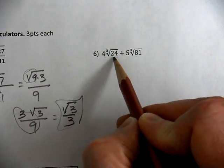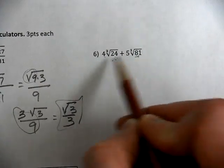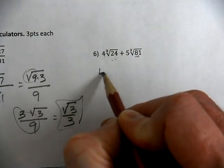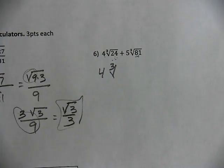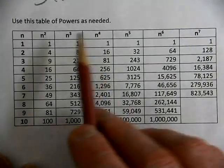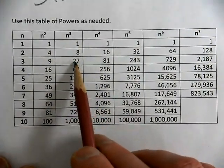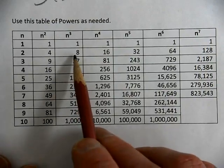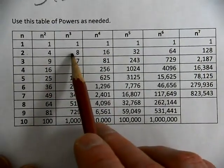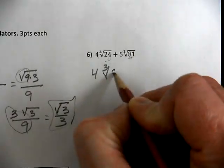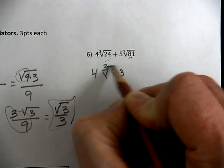Here, my radicands are not the same. They need to be the same. Again, I'm working with the cubed root. When I look at my table, we're working with the cubed root. Which of these numbers goes into 24? 8 goes into 24. 8 times 3 makes 24.